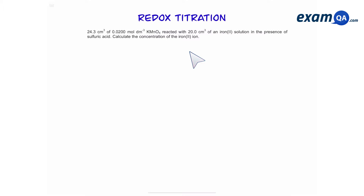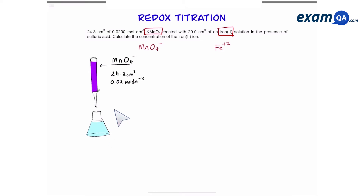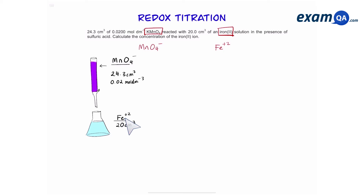The first thing you want to identify is that you have manganate as your oxidizing agent and iron 2+ as your reducing agent. So in this titration, we add manganate, which is 24.3 cm³ of 0.02 mol per dm³ solution, to iron 2+, which has a volume of 20 cm³, but the concentration of iron 2+ is unknown.